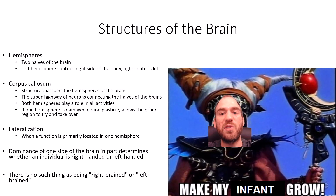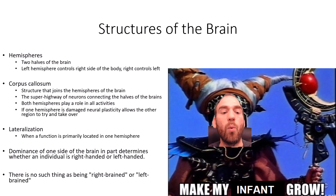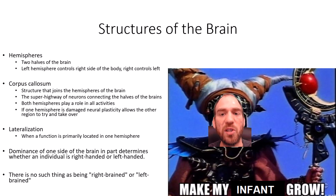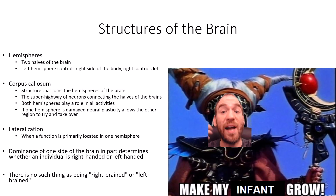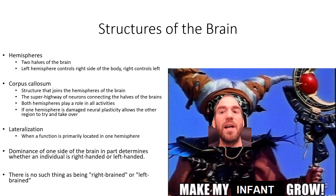The corpus callosum is essentially a massive superhighway of neurons rapidly communicating to engage in complex organized tasks. Although there is lateralization — some parts of the brain are more active during specific activities — the brain broadly works in a very complex, highly organized, cooperative, network fashion, where multiple parts of the brain are active during any given task.